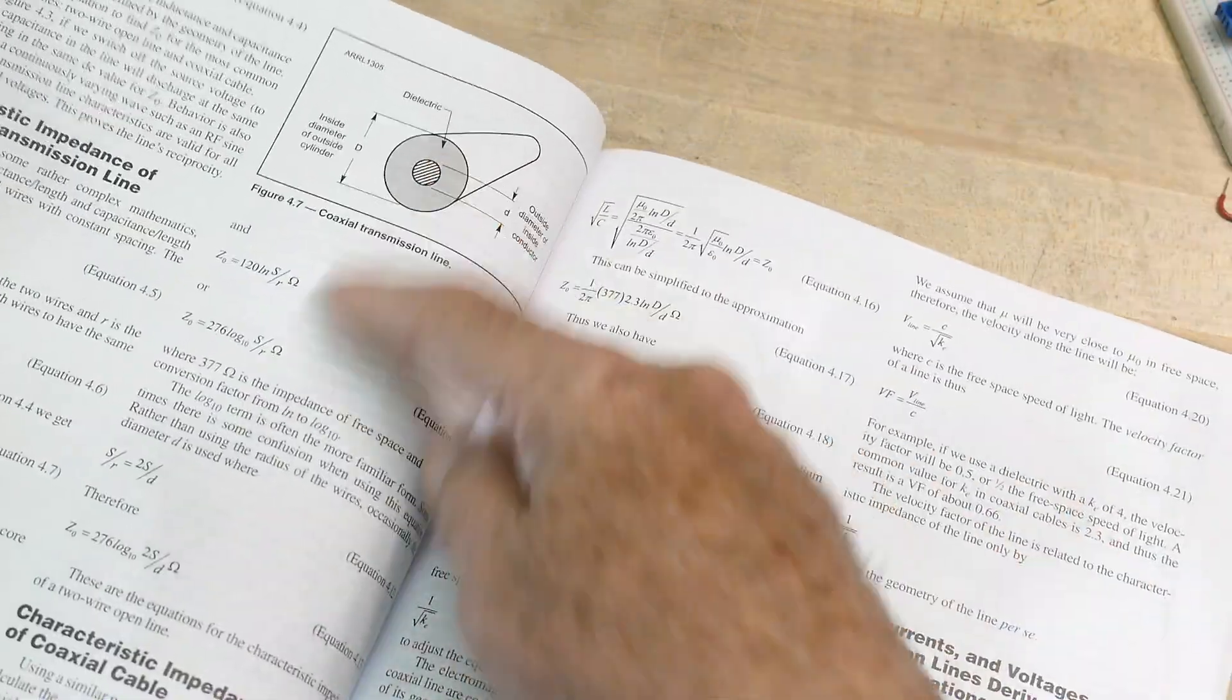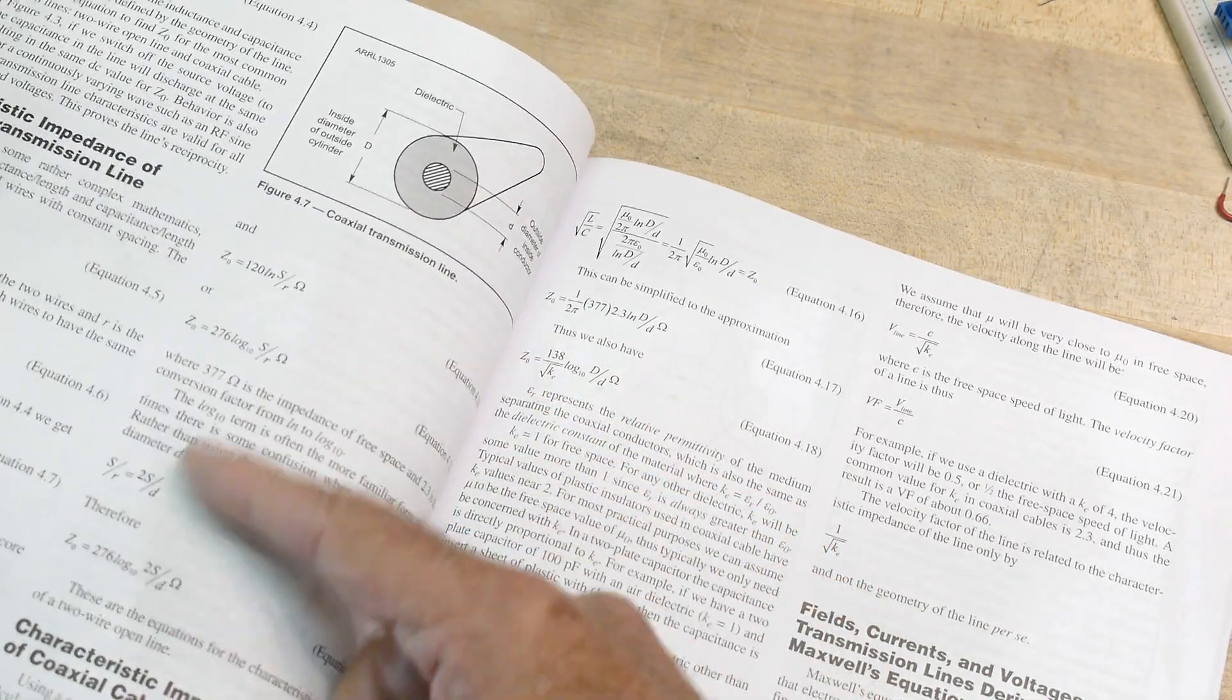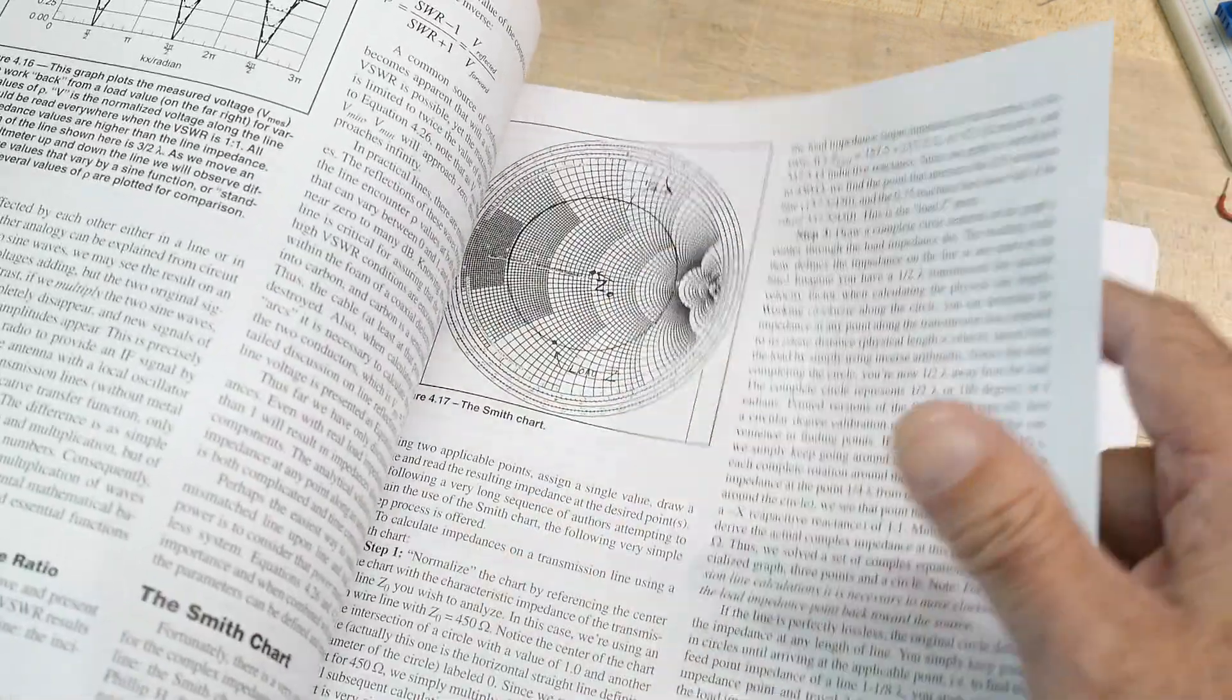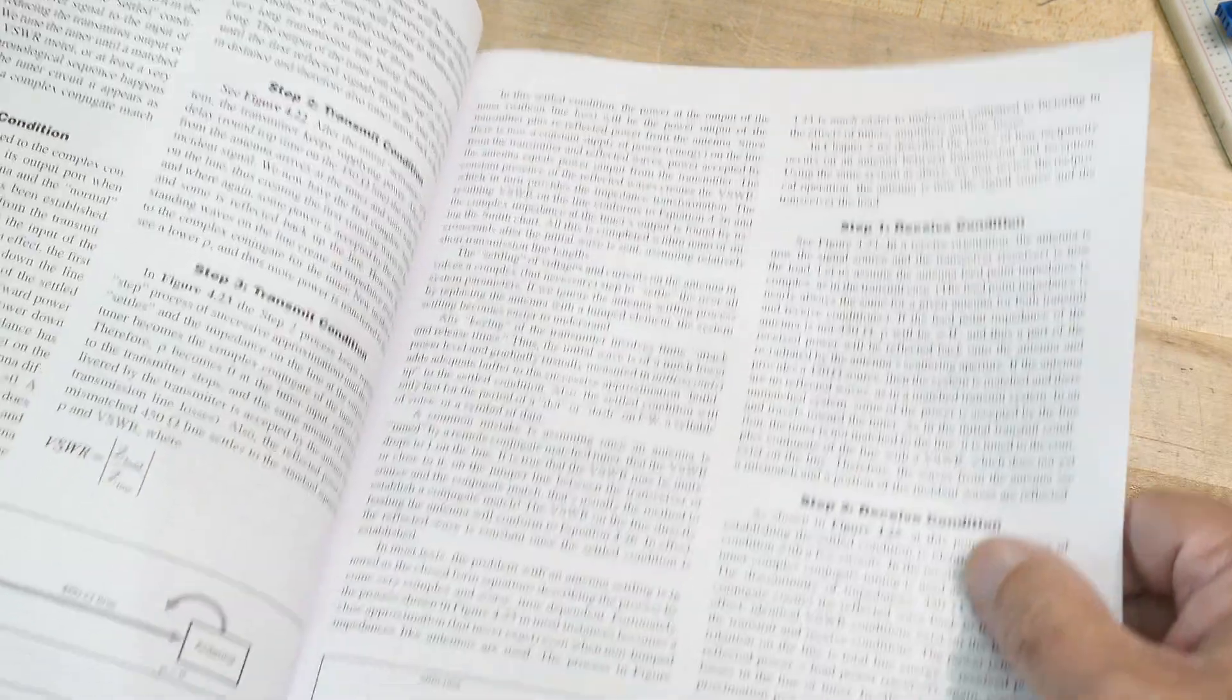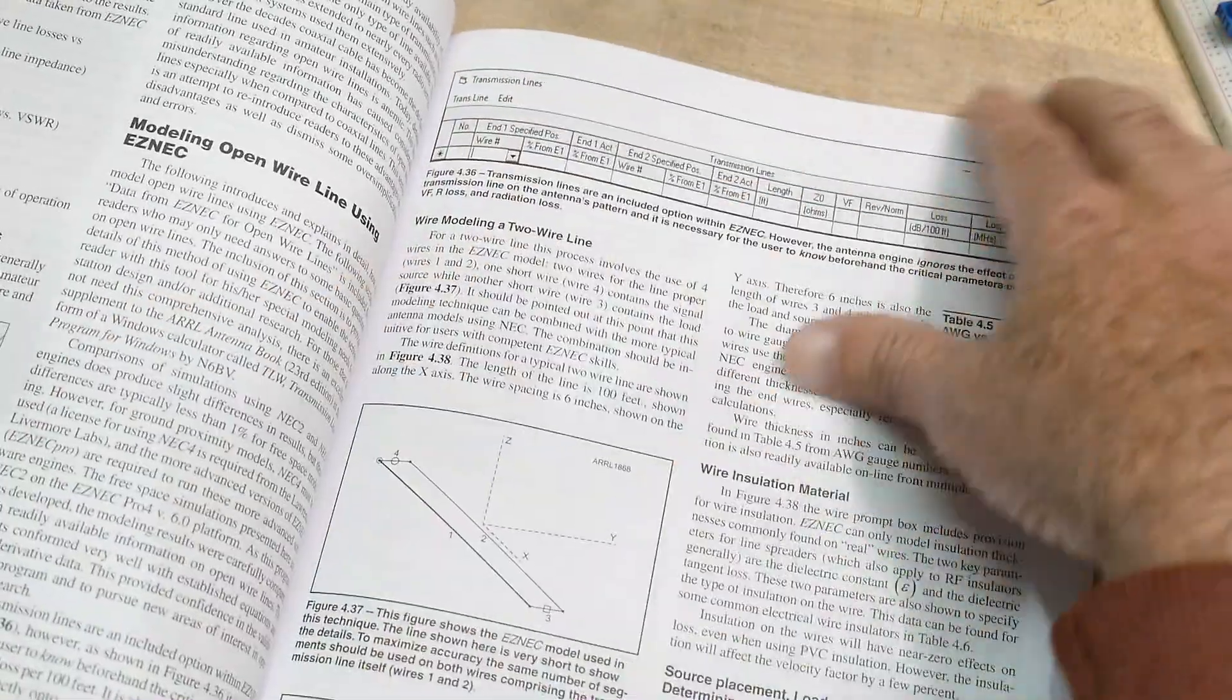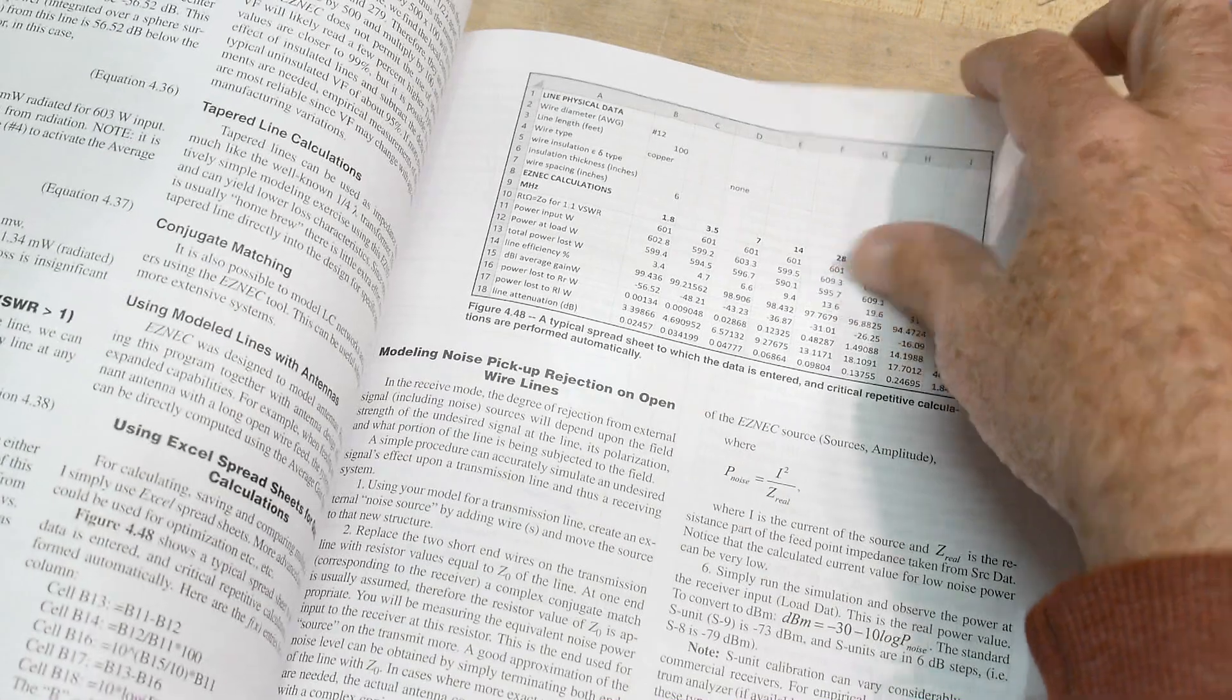And they talk about the equations. I remember having to solve these in the hard way, but they give you some equations. What else do they have in this book? Smith charts. So they have a whole thing here on conjugate match, Smith charts, what's VSWR? Why is reflected power bad? It gets back into your transmitter. They have a whole bunch of that in here.